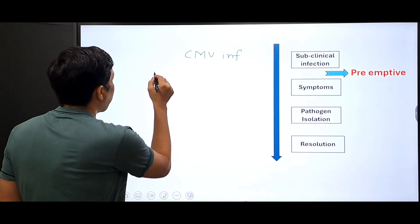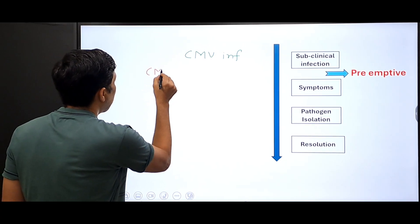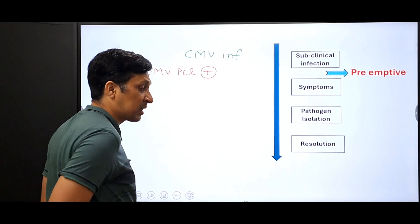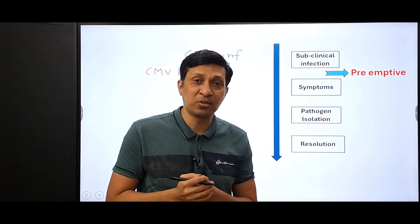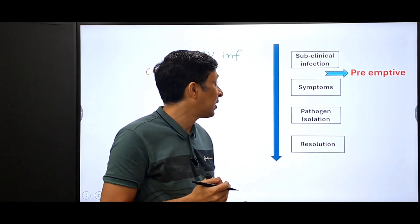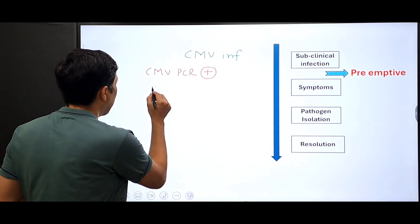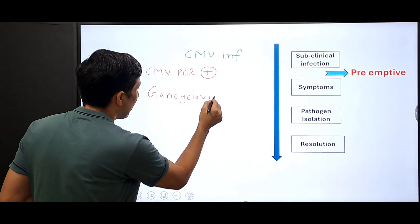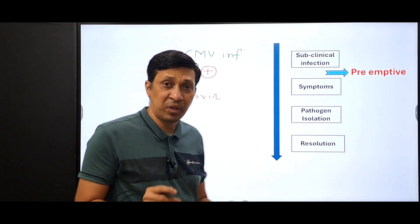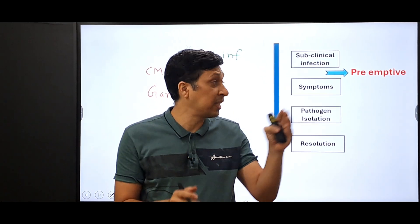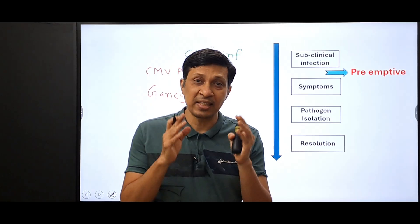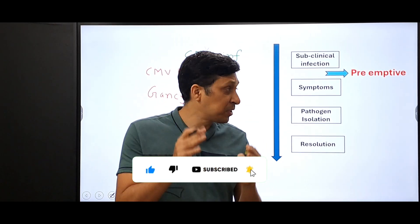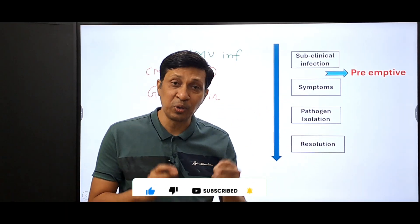For example, in case of cytomegalovirus infection, which is common in organ transplant patients and can be deadly, we do CMV PCR. If it is positive — meaning we can detect the DNA of this virus in the blood — we start treatment with the antiviral drug ganciclovir. In this way, we detect the infection in its subclinical stage and start treatment, which is called preemptive therapy.